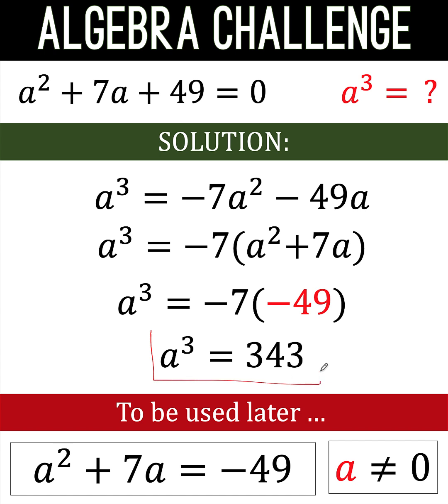The negative 7 times negative 49 is 343, and this gives us already the value of a cubed. We already know that a cubed is equal to 343, and that solves the problem. So a cubed is equal to 343.